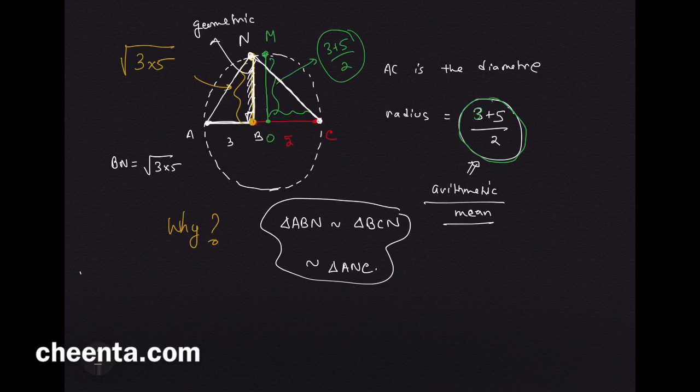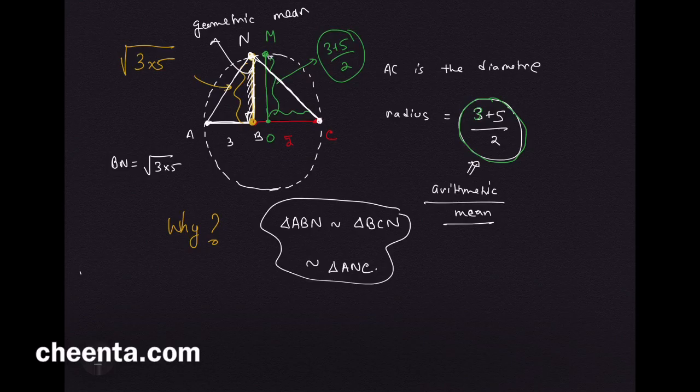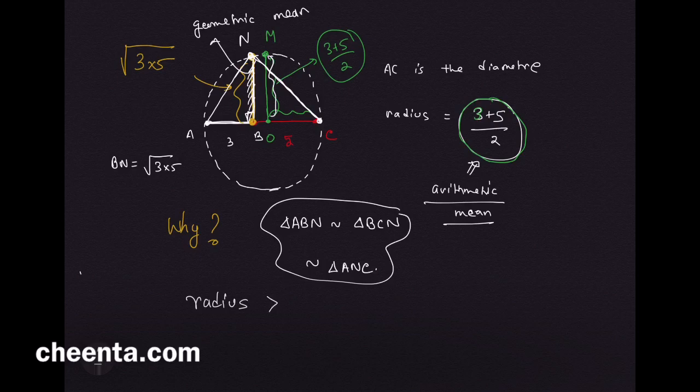If BN is the geometric mean and if OM is the arithmetic mean, you can easily see that the radius will be greater than any other half chord. If you look at this, BN you can think of this as a half chord.